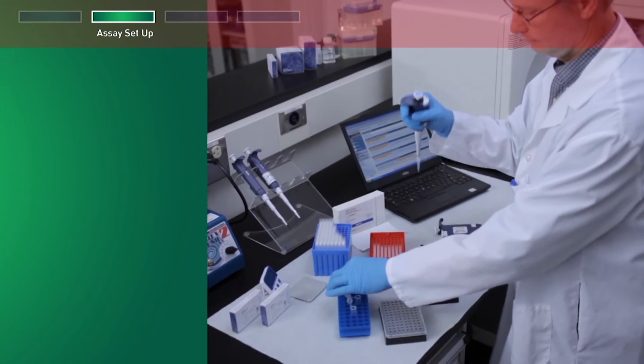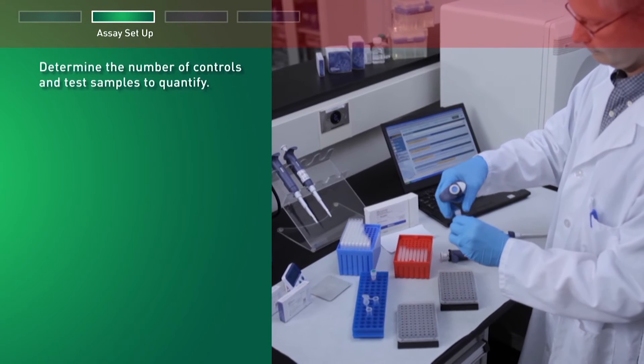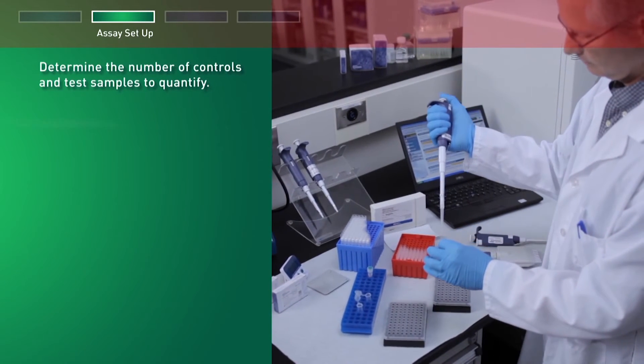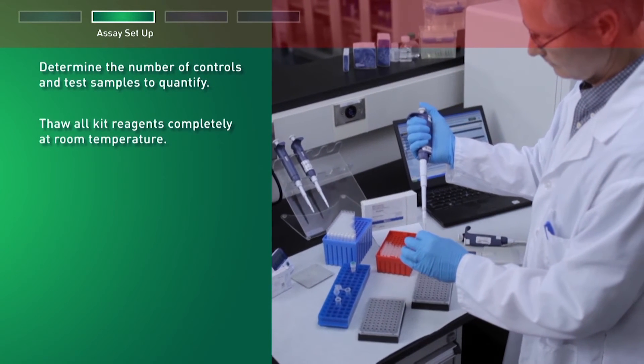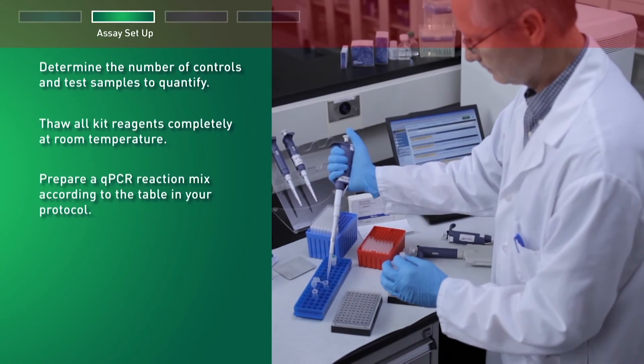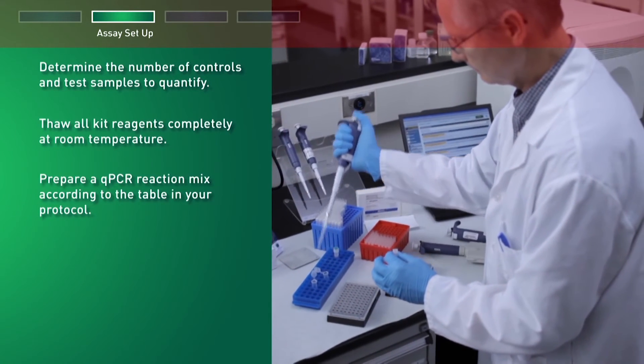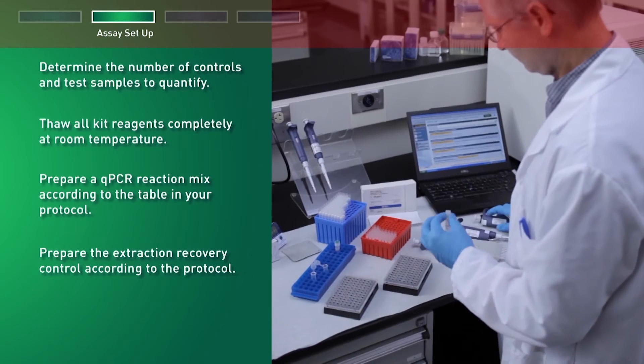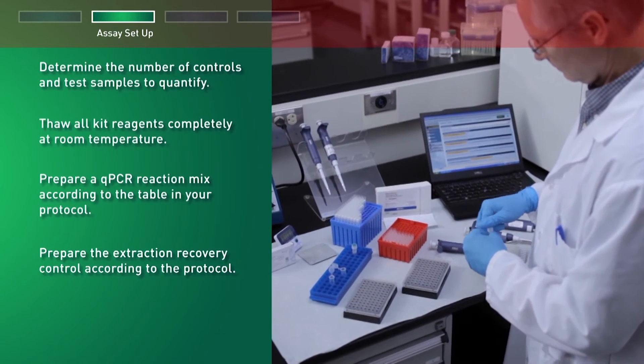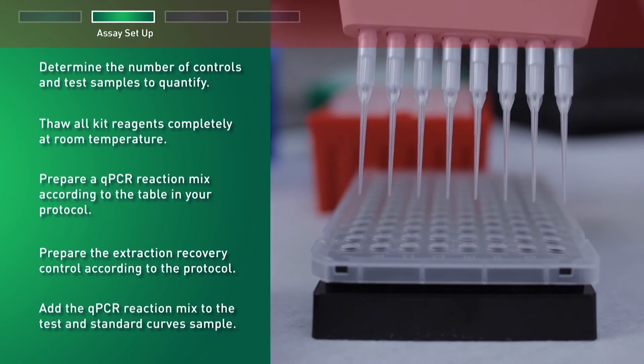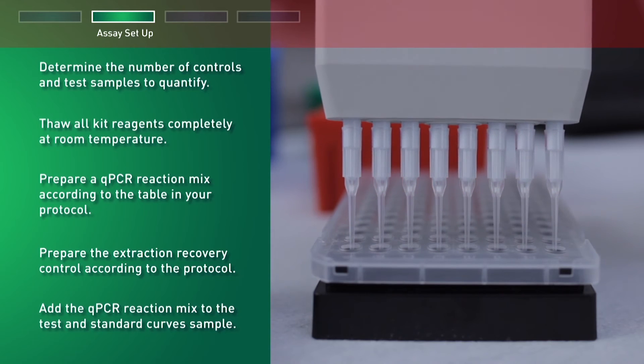First, determine the number of controls and test samples to quantify. Then thaw all kit reagents completely at room temperature. Prepare a qPCR reaction mix according to the table in your protocol. Prepare the extraction recovery control according to the protocol, then add the qPCR reaction mix to the test and standard curve sample.